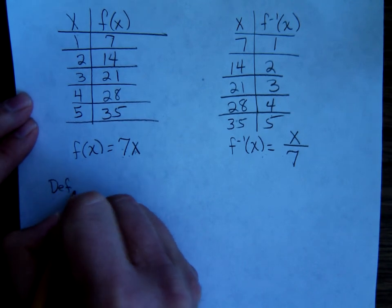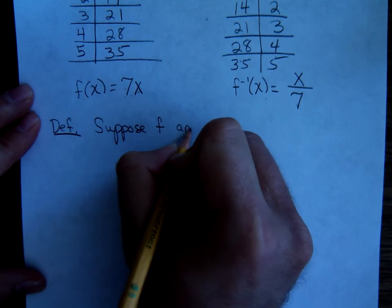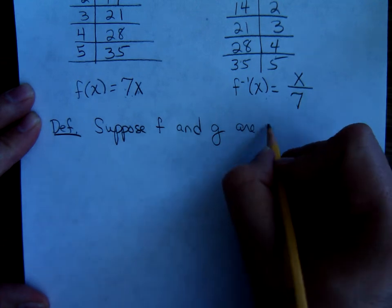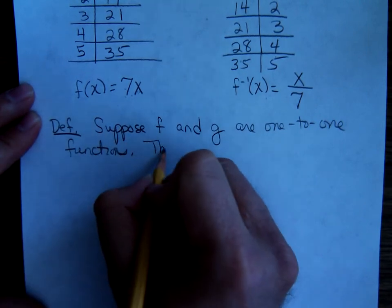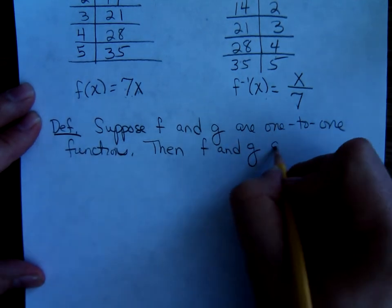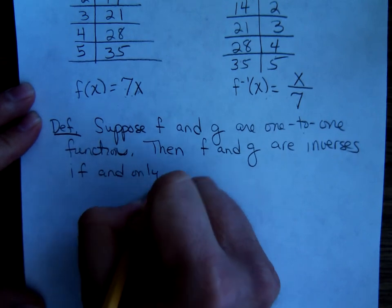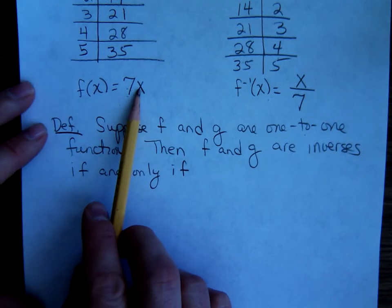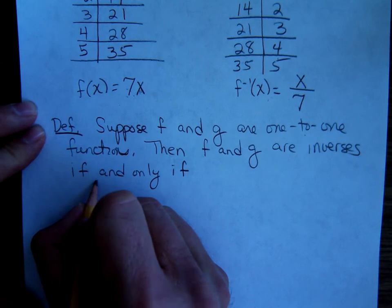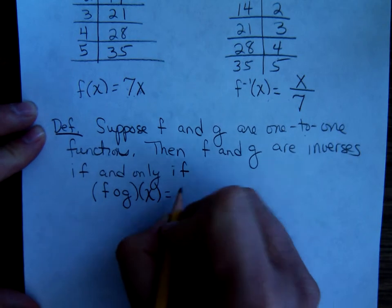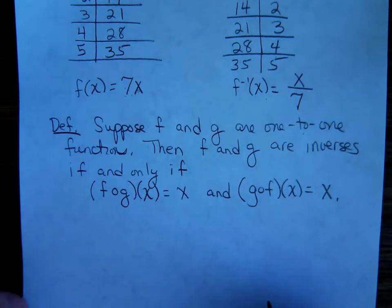The way we say that algebraically is like this. It's a definition. Let's suppose f and g are one-to-one functions. Then f and g are inverses if and only if f of g of x equals x and g of f of x equals x. That's the formal definition for inverse functions.